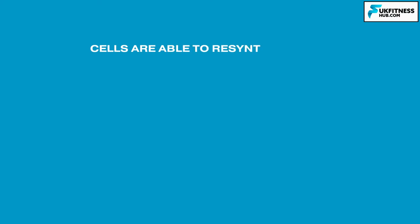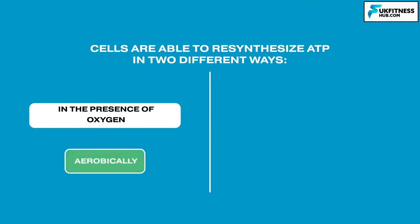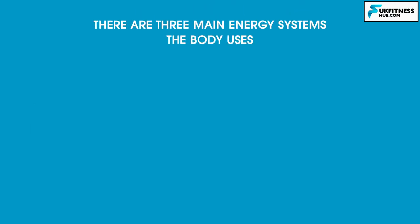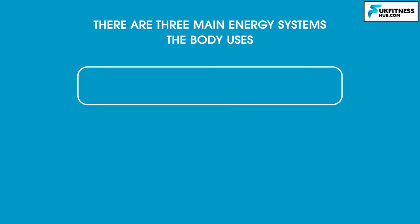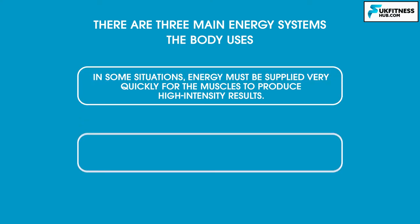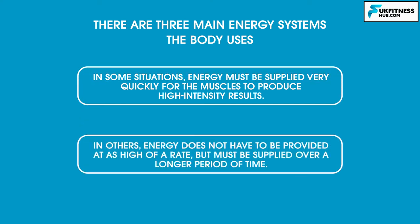Cells are able to resynthesize ATP in two different ways: in the presence of oxygen, aerobically, and in the absence of oxygen, anaerobically. Whether ATP is resynthesized aerobically or anaerobically is dependent on the length and intensity of the activity. There are three main energy systems that the body uses, and different sporting situations have different energy demands. In some situations, energy must be supplied very quickly for the muscles to produce high-intensity results. In others, energy does not have to be produced at a high rate, but it must be supplied over a longer period of time.